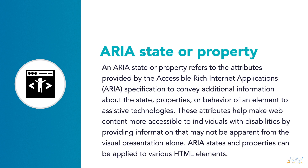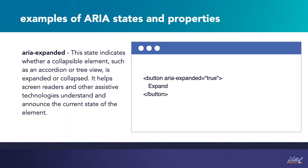An ARIA state or property refers to attributes provided by the Accessible Rich Internet Applications specification to convey additional information about the state, properties, or behavior of an element to assistive technologies. These attributes help make web content more accessible to individuals with disabilities by providing information that may not be apparent from the visual presentation alone. ARIA states and properties can be applied to various HTML elements.